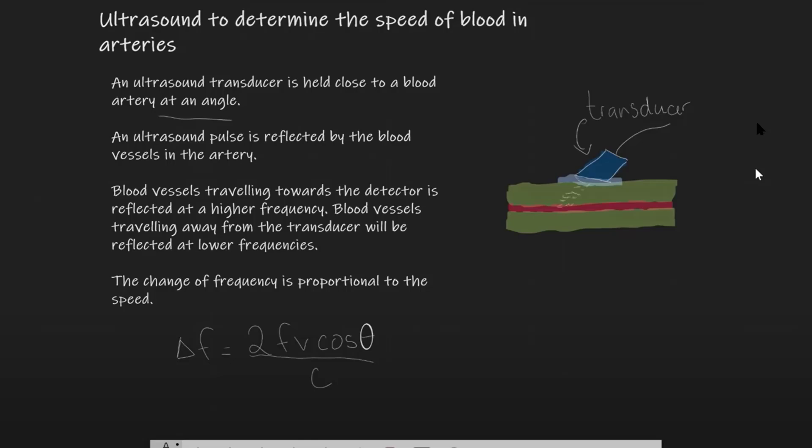Let's also briefly remind ourselves on how to use ultrasound to determine the speed of blood in the arteries. We use an ultrasound transducer and we hold it quite close with some gel and it has to be held at an angle. An ultrasound pulse is reflected by the blood vessels in this artery across here. Now, blood vessels which are traveling towards the detector will be reflected at higher frequencies and if they're traveling away from the transducer, they'll be reflected at lower frequencies. We can actually measure a change in frequency which will be proportional to the speed.